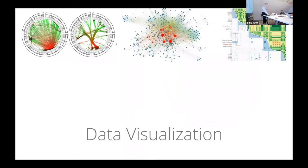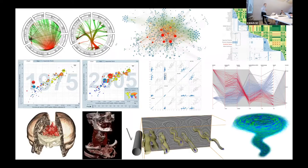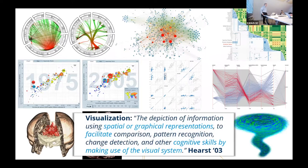Data visualization — such as graphs and several variants, or other multivariate data — is what I focus on. In information visualization, and in domains more familiar to you like scientific data visualization such as volumetric data in medicine or biology, or streaming data and flow visualizations — these are important to help human beings access and explore data. Visualization is the depiction of information using spatial or graphic representation to facilitate comparison, pattern recognition, change detection, and other cognitive skills by making use of the visual system.